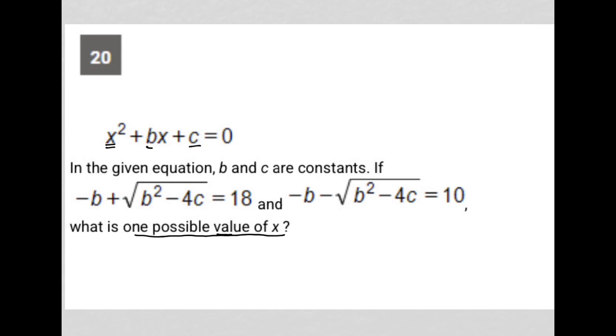We're told we have x² + bx + c = 0. In the given equation, b and c are constants. If -b + √(b² - 4c) = 18 and -b - √(b² - 4c) = 10, what is one possible value of x?